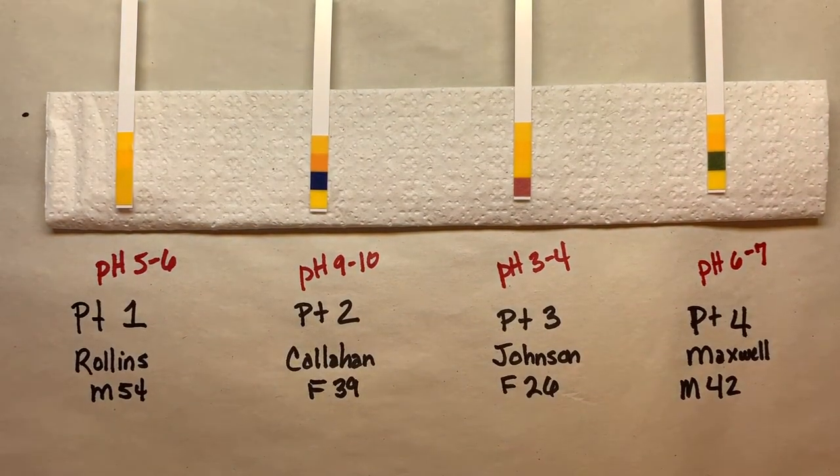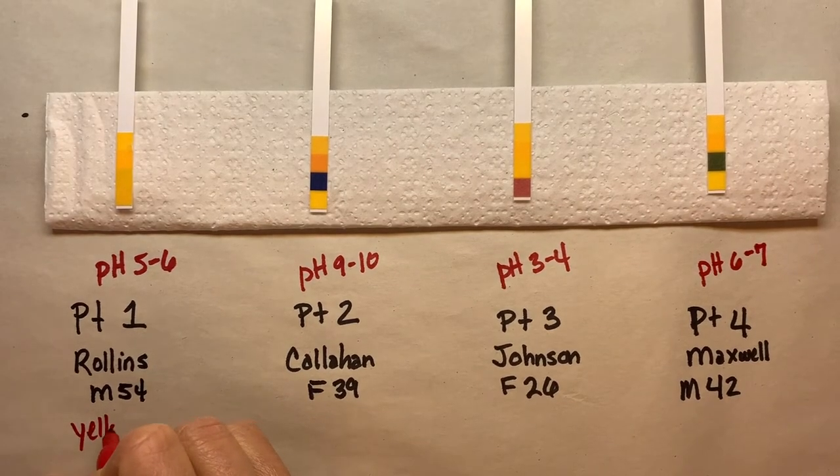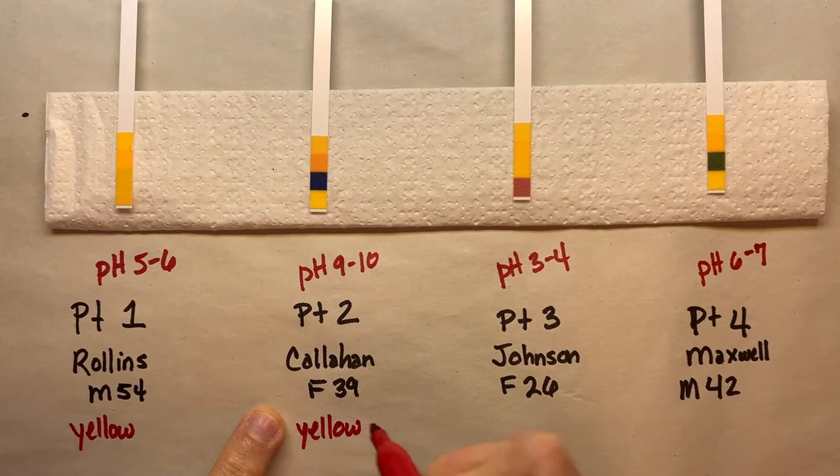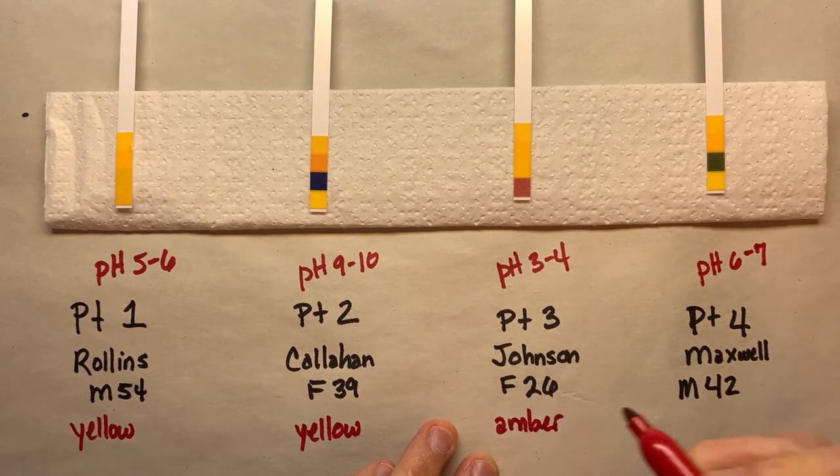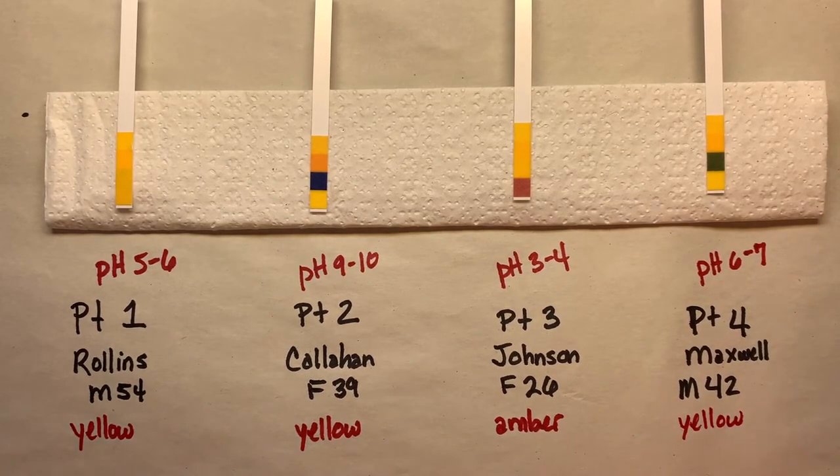Okay, so when we're filling in our chart, we notice that we have a yellow color for the first patient, yellow. For the second patient we had sort of an amber. For the third patient and we had a yellow for Mr. Maxwell.